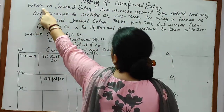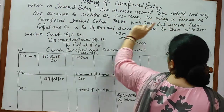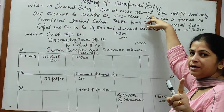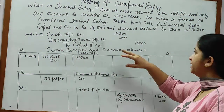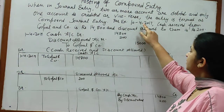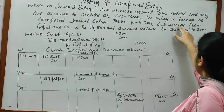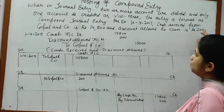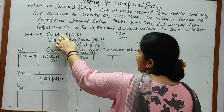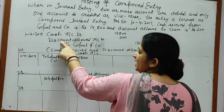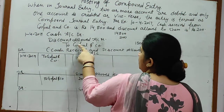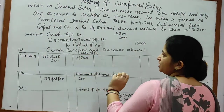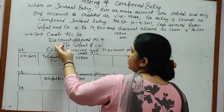Now posting of compound entry. When in a journal entry two or more accounts are debited and only one account is credited, or vice versa — one account debited and two or more accounts credited — the entry is termed as a compound journal entry. For example, 10th April 2017: cash received from Gopal and Company rupees 14,800 and discount allowed to them rupees 200. Three accounts will be here: cash account, discount allowed account, and Gopal and Company account.